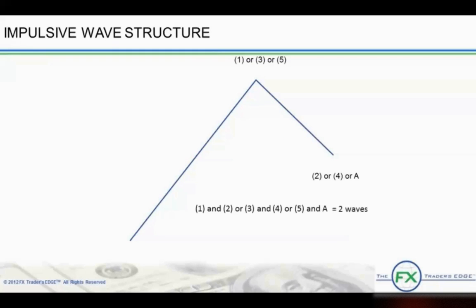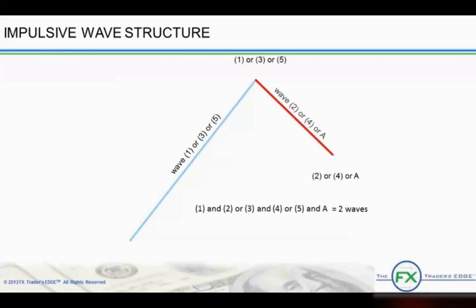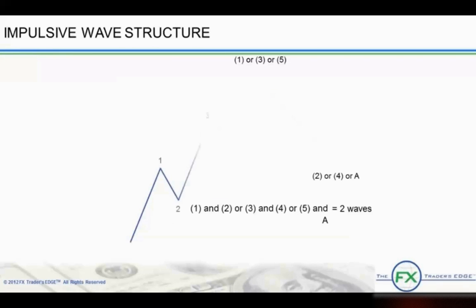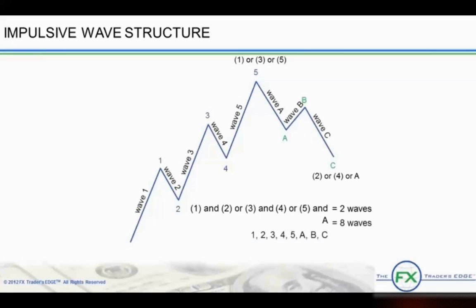Since waves are self-similar, this rising wave can be a wave 1, 3, or 5 in a 5-wave sequence. These are the impulsive waves which move in the direction of the trend. Each impulsive wave, once complete, is followed by a corrective wave. Now you are beginning to see the repetitive nature of the waves that Elliott first described, when he looked at the stock market as a fractal.